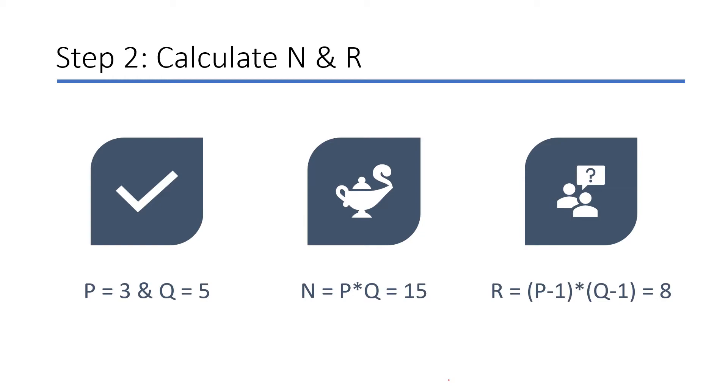So I'm gonna calculate N and R. N is equal to P multiple of Q, which means the product of the prime numbers 3 and 5, that gives me 15. Then I'm gonna run another calculation, that is R is equal to P minus 1 multiple of Q minus 1, that is 8. So now I have four numbers: P, Q, N, and R.